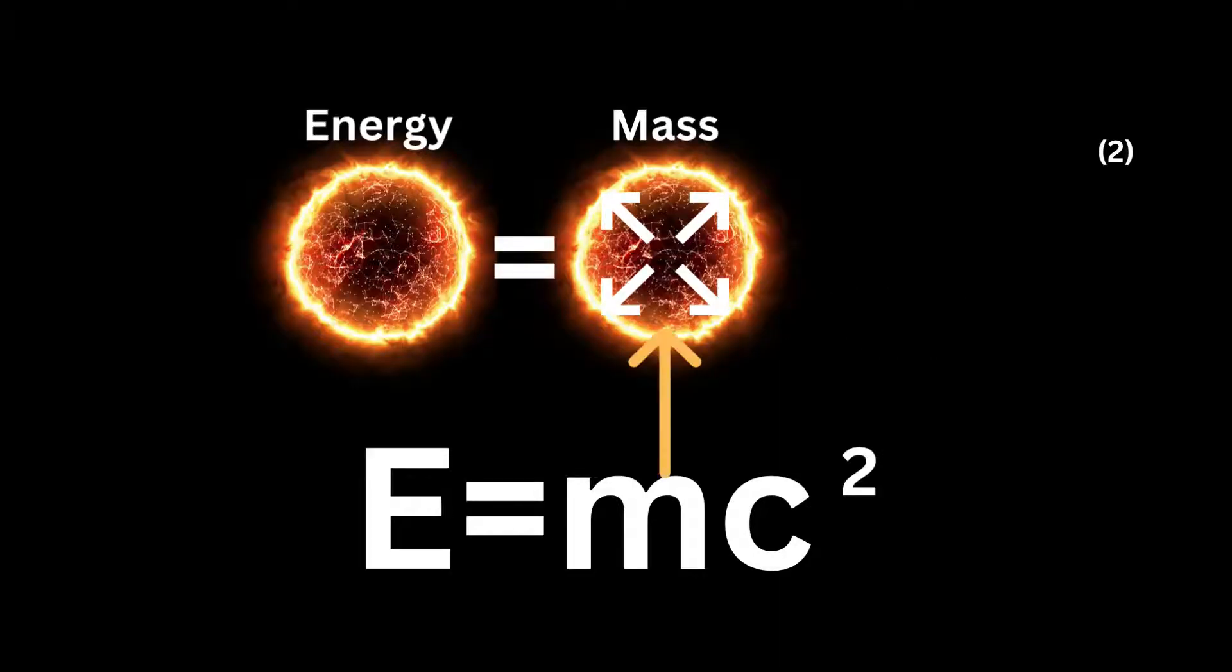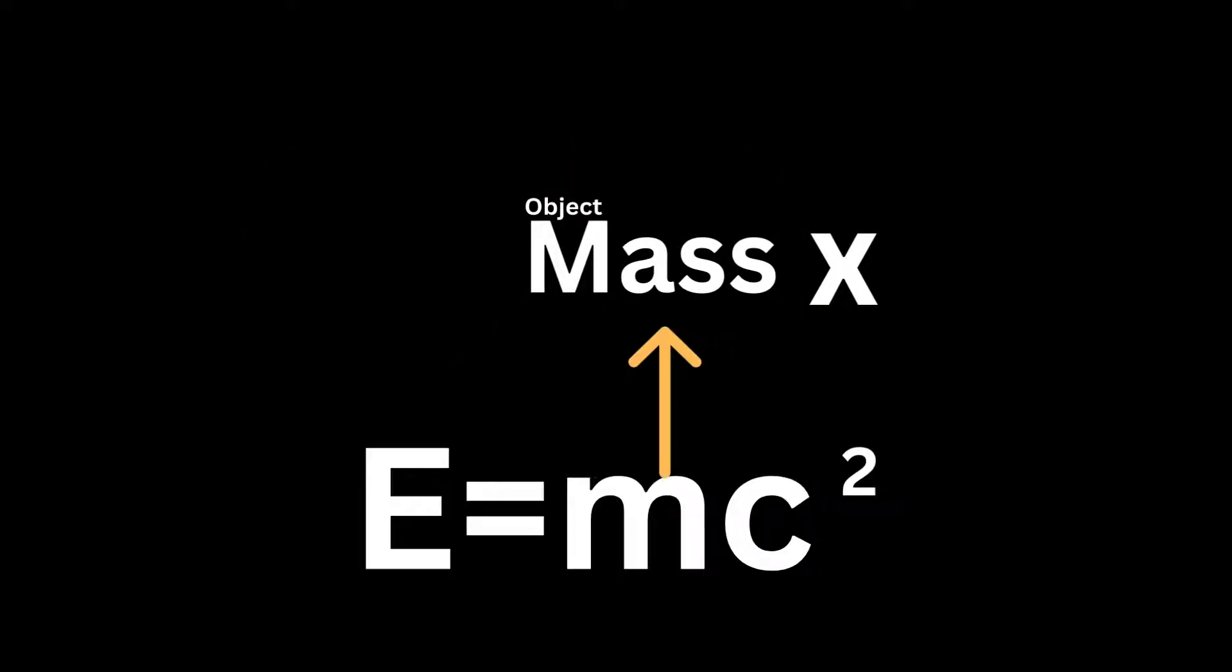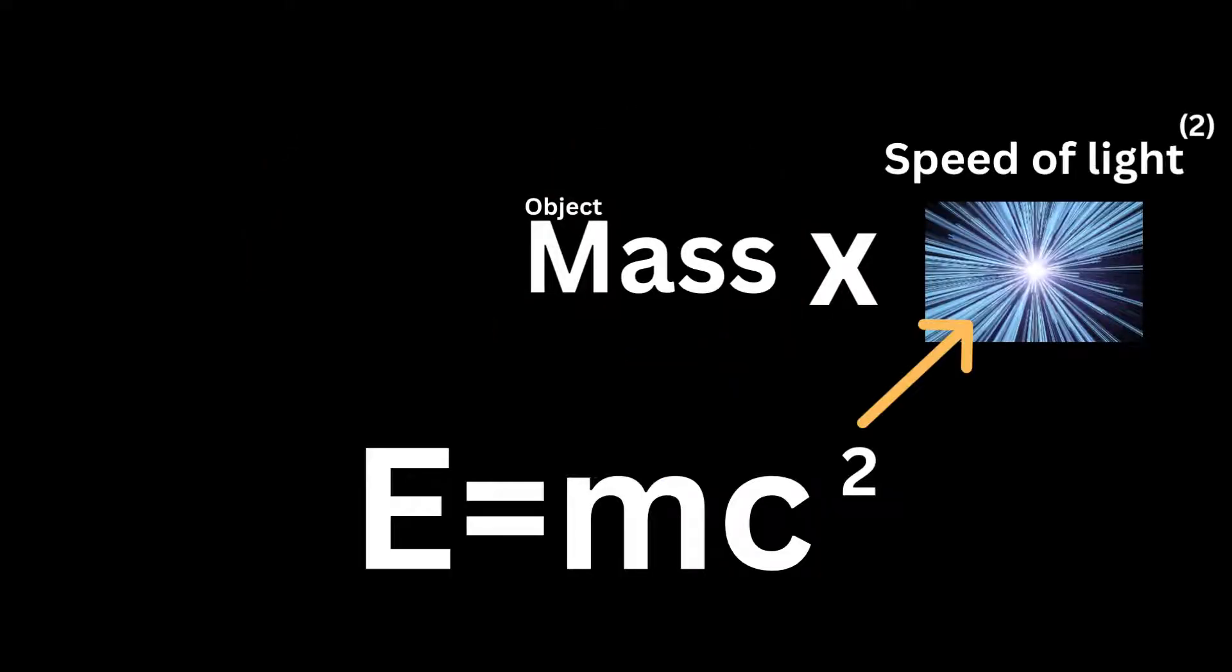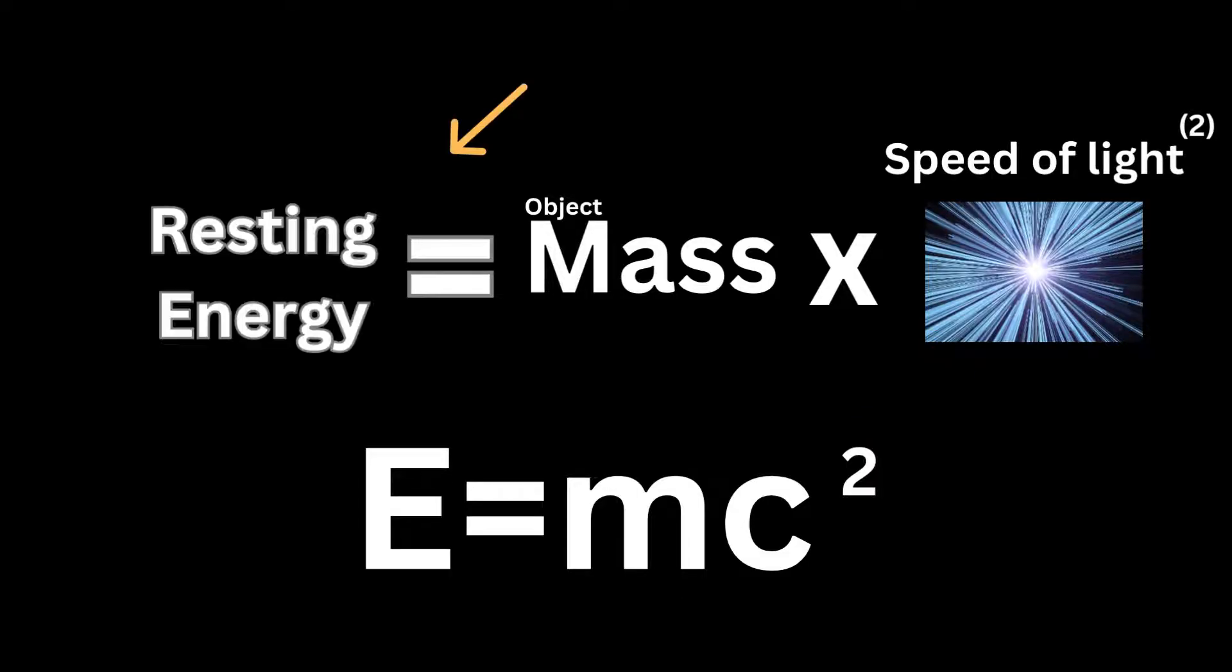2. Massive energy. According to the equation, mass carries energy. By multiplying an object's mass by the square of the speed of light, one can determine the resting energy of the object. It implies that an object still has energy due to its mass, even when it is not moving, in other words, when its kinetic energy is zero.